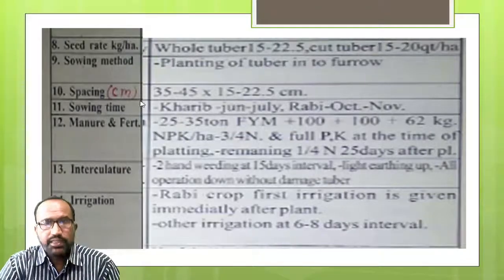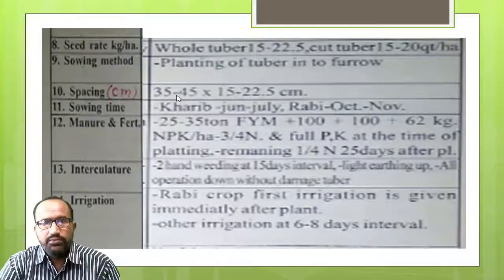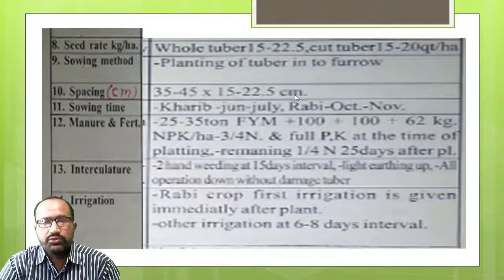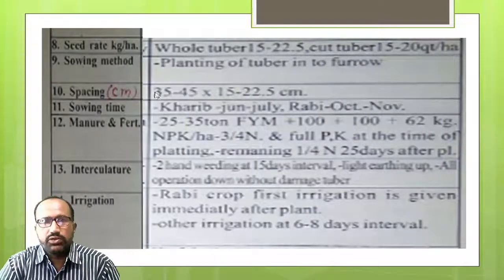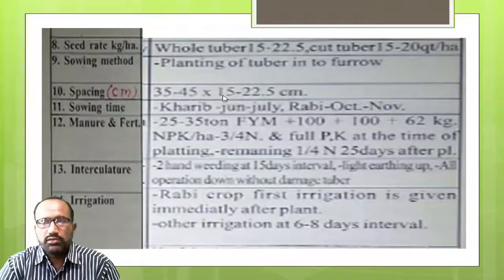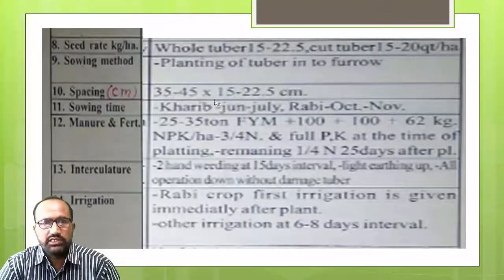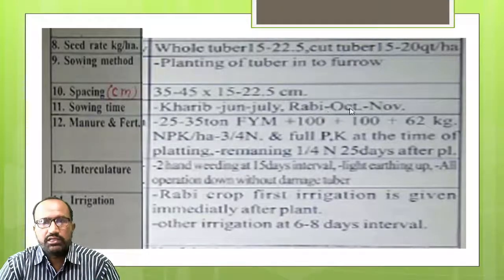Spacing: 35 to 45 cm by 15 to 22.5 cm. Sowing time — Kharif season: June to July, and Rabi season: October to November.